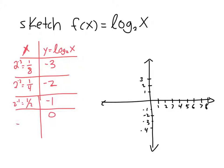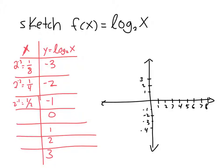For y = 0: 2 to the 0 is 1. For y = 1: 2 to the 1 is 2. For y = 2: 2 squared is 4. And for y = 3: 2 cubed is 8. Now let's go ahead and start plotting these points.